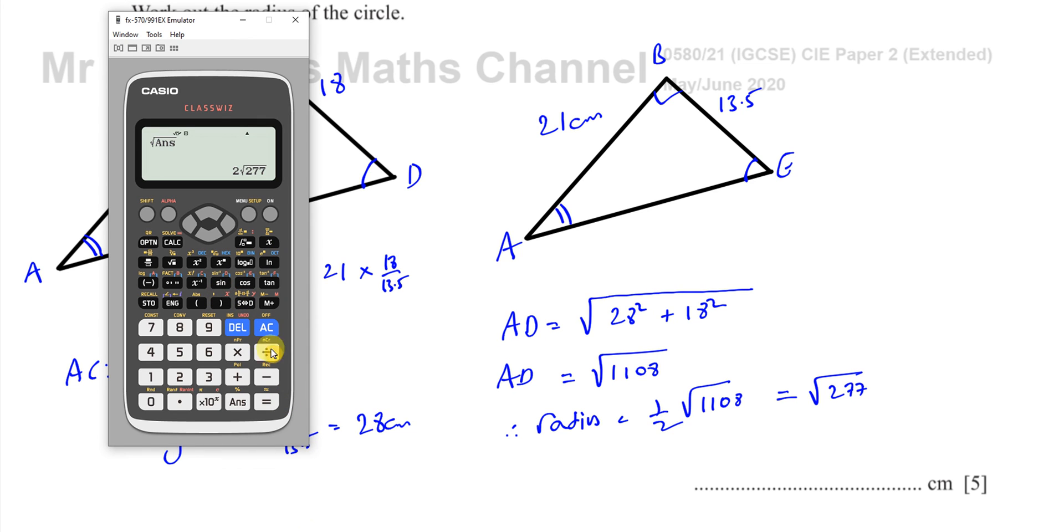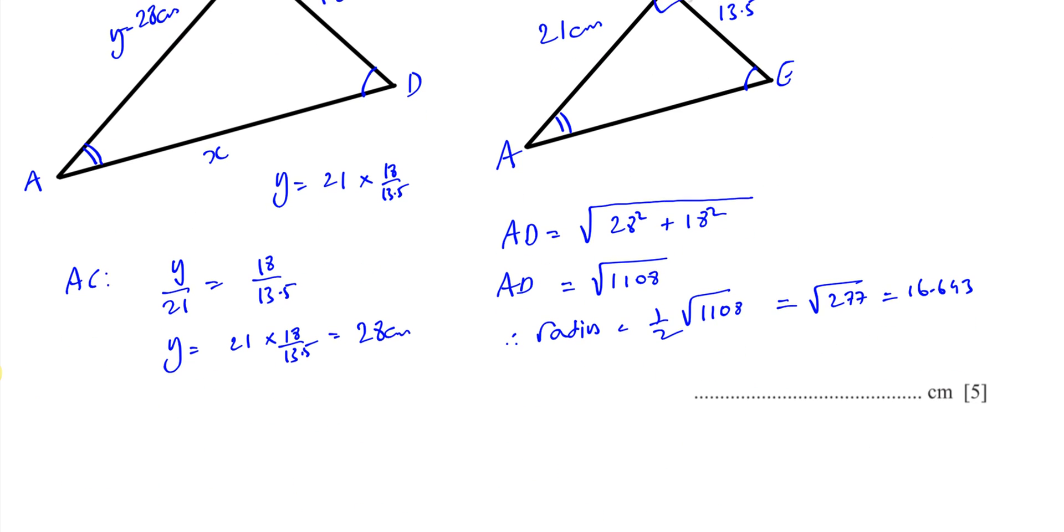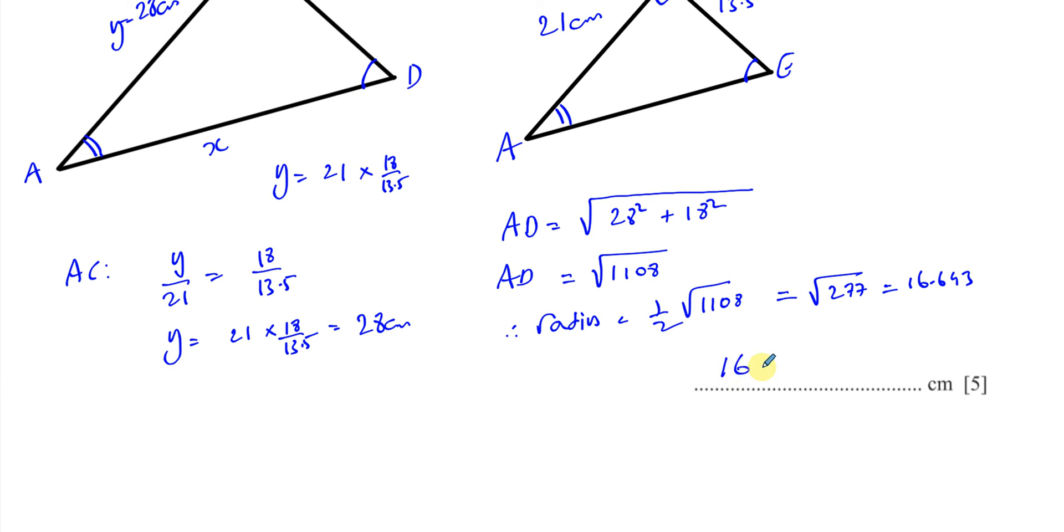Which gives you, so if you multiply that by 0.5, which we need to do to find the radius, that gives you 16.64. Okay. So 16.643. 16.643. Which, if they don't say otherwise, we have to write to three significant figures. 16.6 centimeters.